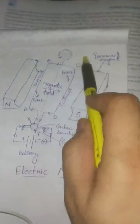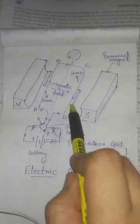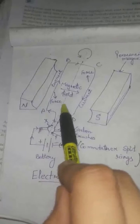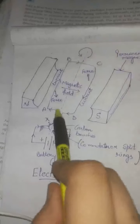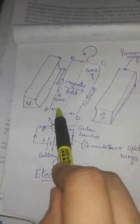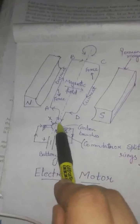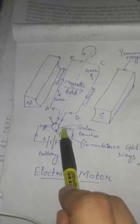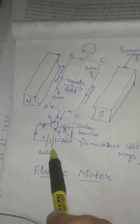This will be explained from the diagram. You can see the diagram — this is the coil ABCD, and this coil is being placed in the magnetic field provided by two horseshoe type magnets, and it rotates on the axis in the anti-clockwise direction. This coil is further connected to the commutator rings, and commutator rings are further connected to brushes. Brushes are connected to the battery.